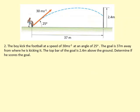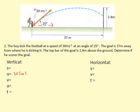A boy kicks a football at a speed of 30 meters per second at an angle of 25 degrees above the horizontal. The goal is 37 meters away from where he's kicking it. The top bar is 2.4 meters above the ground. Determine if he scores the goal. We're going to set up some equations here. We're going to get the vertical and horizontal speeds first. So vertical speed is 30 sin 25, and horizontal speed is going to be 30 cos 25.